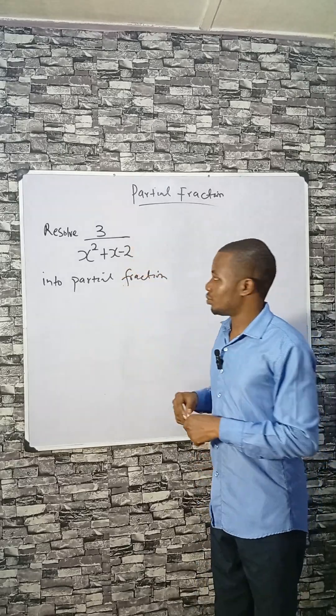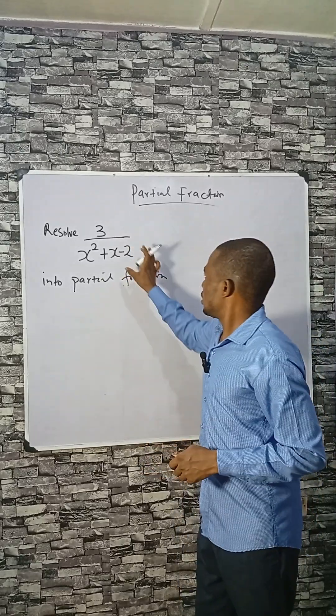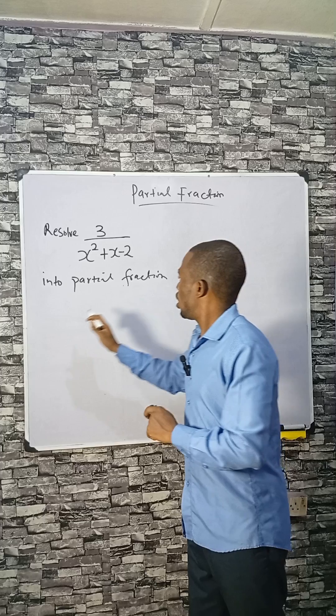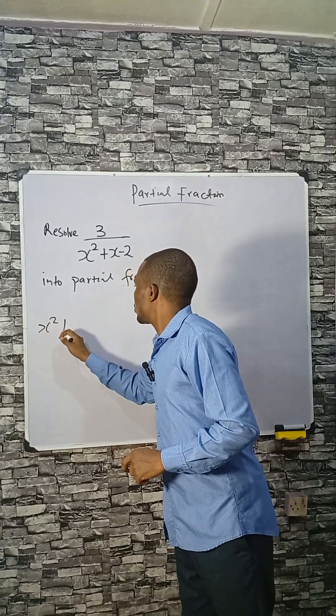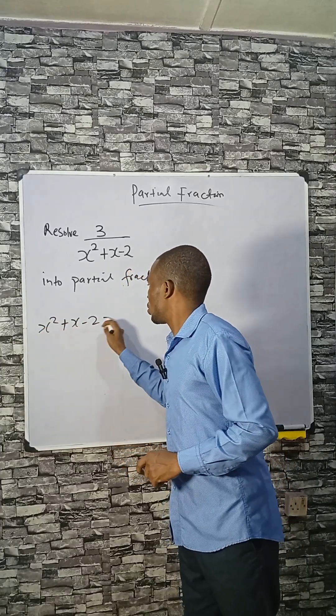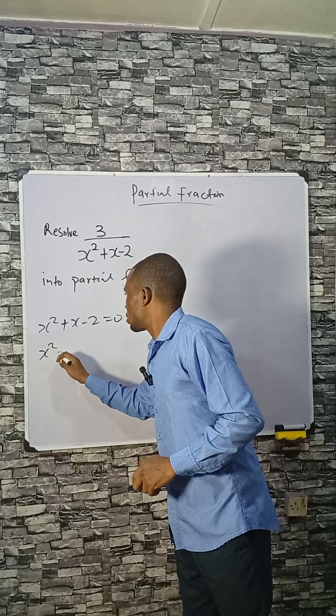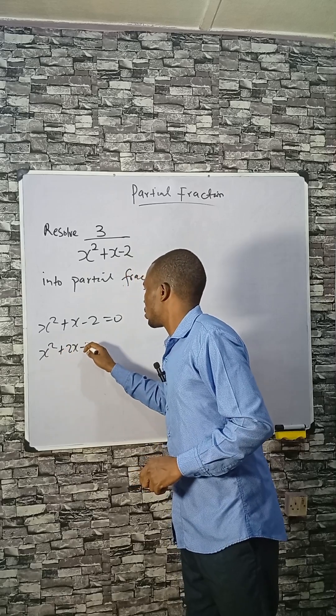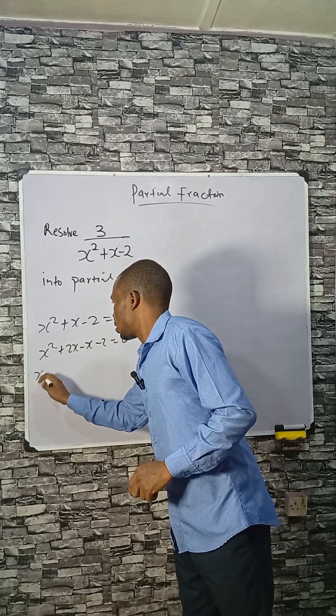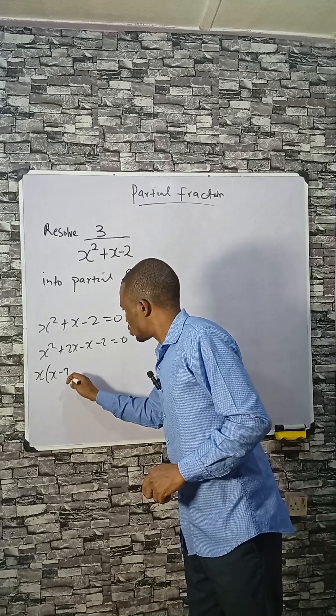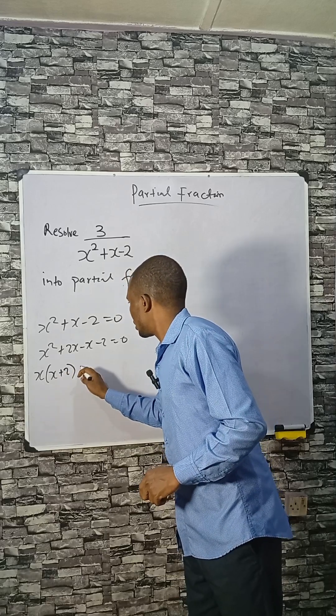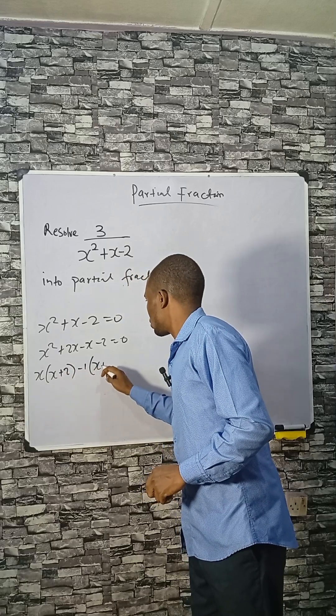Let's resolve this into partial fractions. Now let's see if the base is factorable. x squared plus x minus 2 equals 0, so x squared plus 2x minus x minus 2 equals 0. The factors here are x minus 1 into x plus 2.